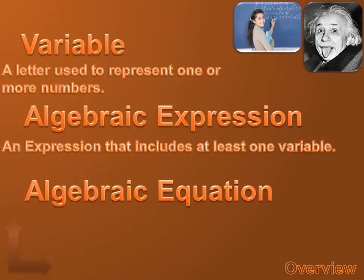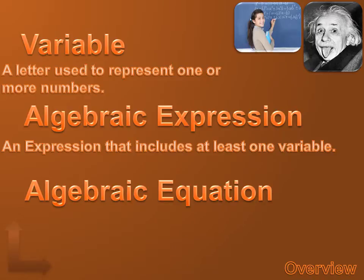An Algebraic expression is an expression that includes at least one variable. And an Algebraic equation is a math sentence formed by placing the equal sign between two expressions.